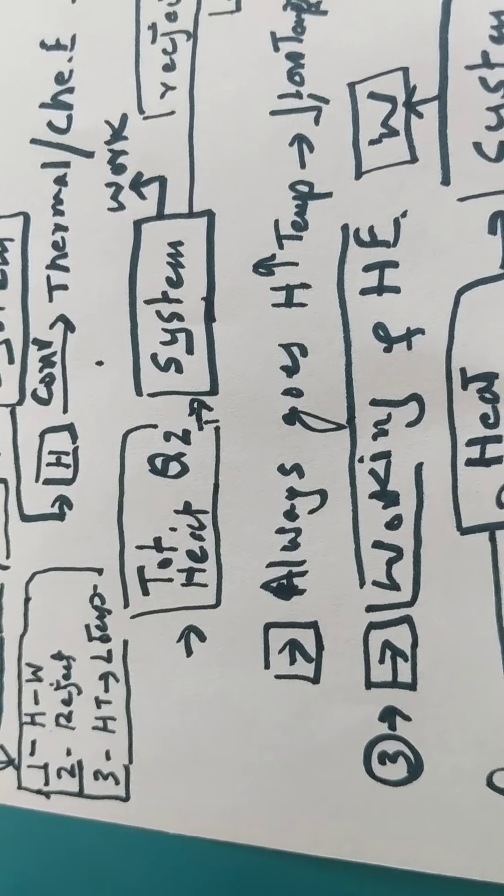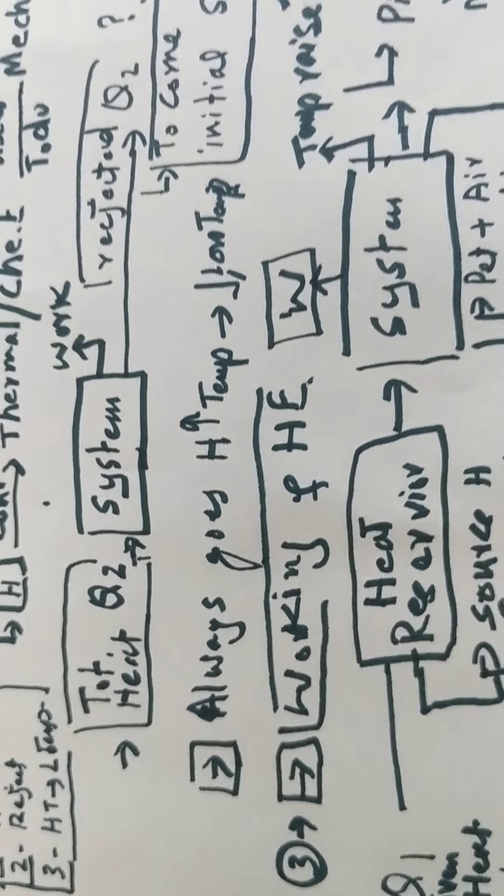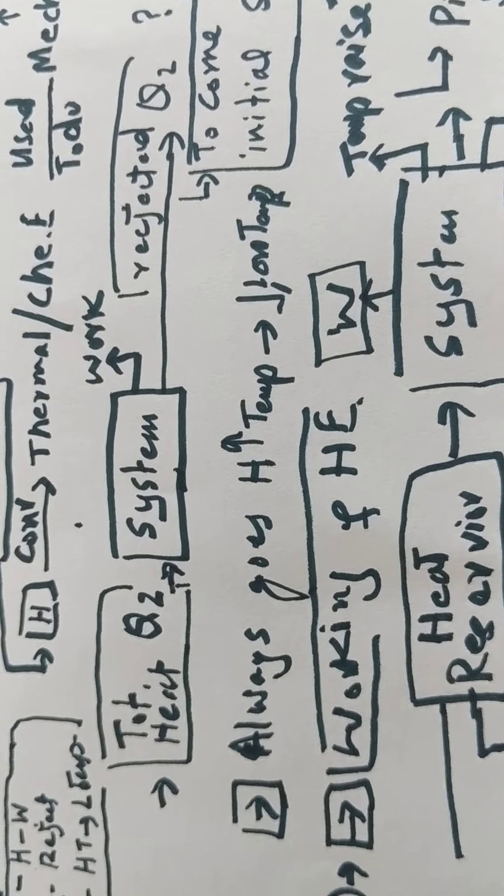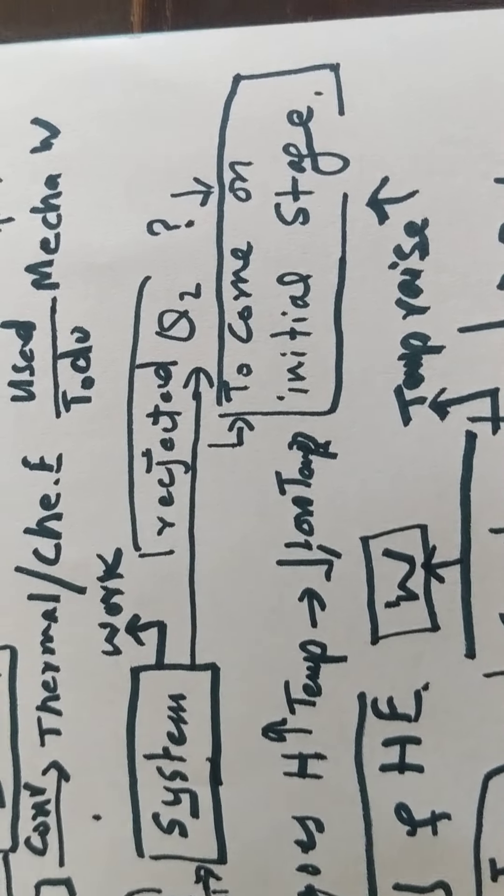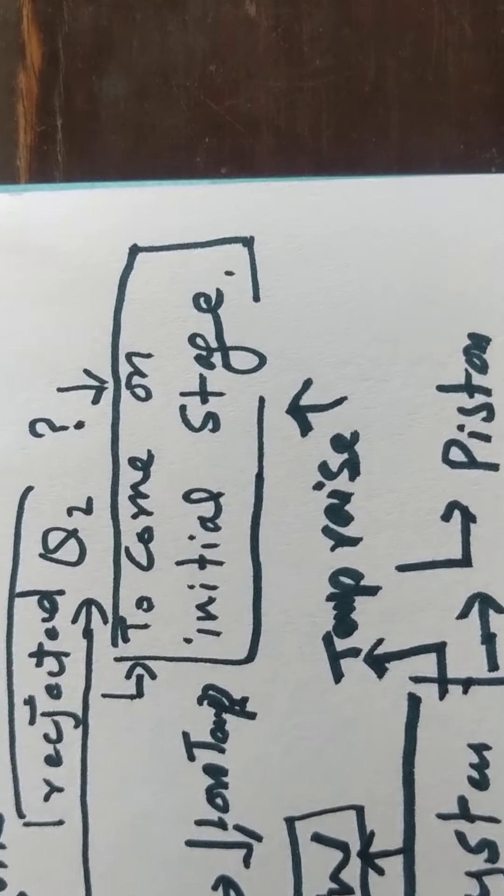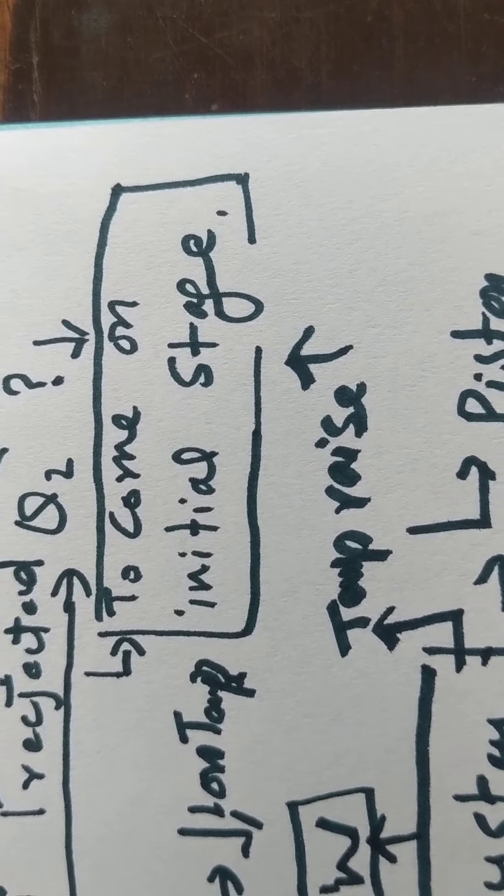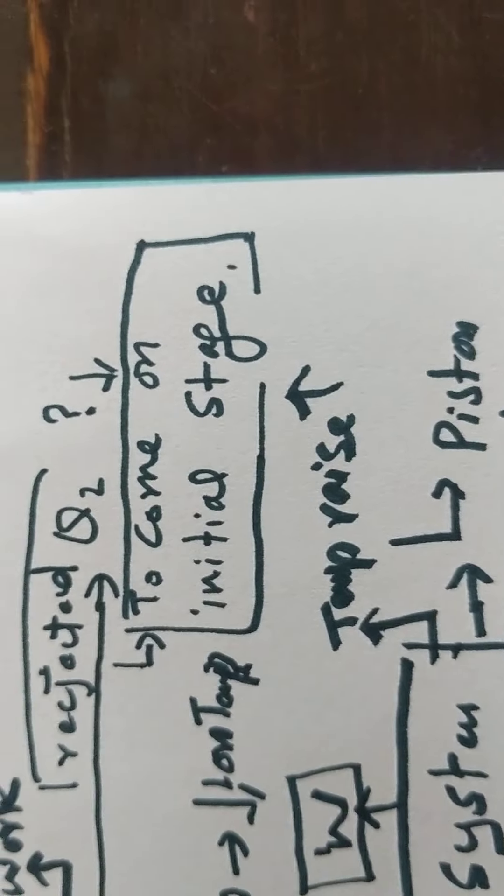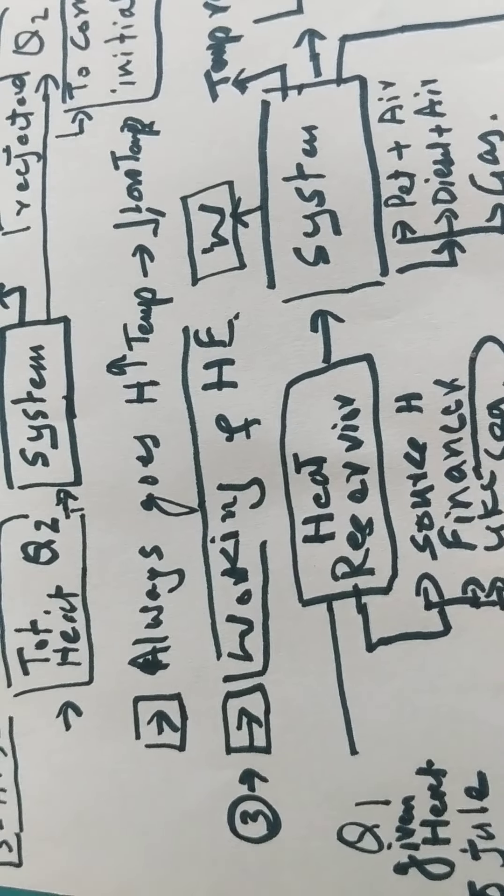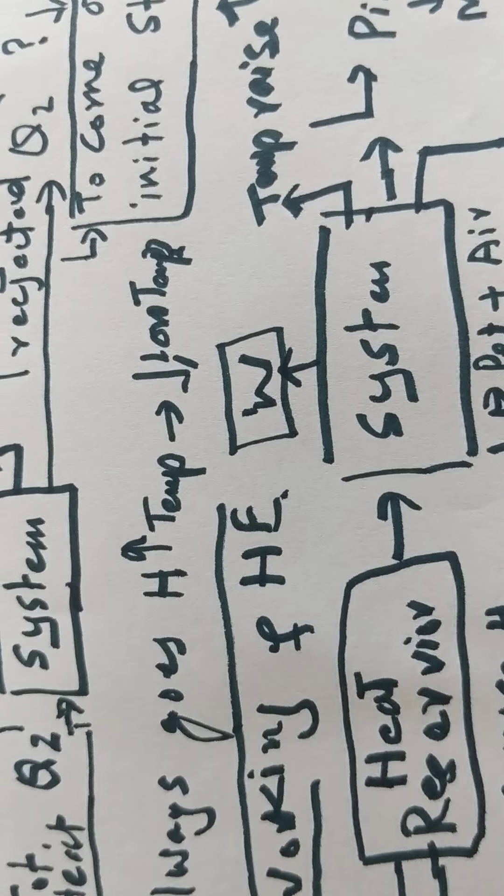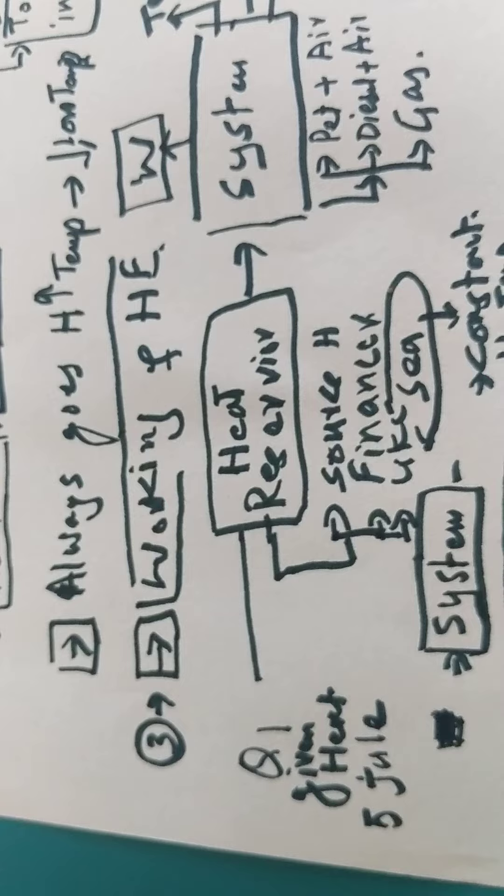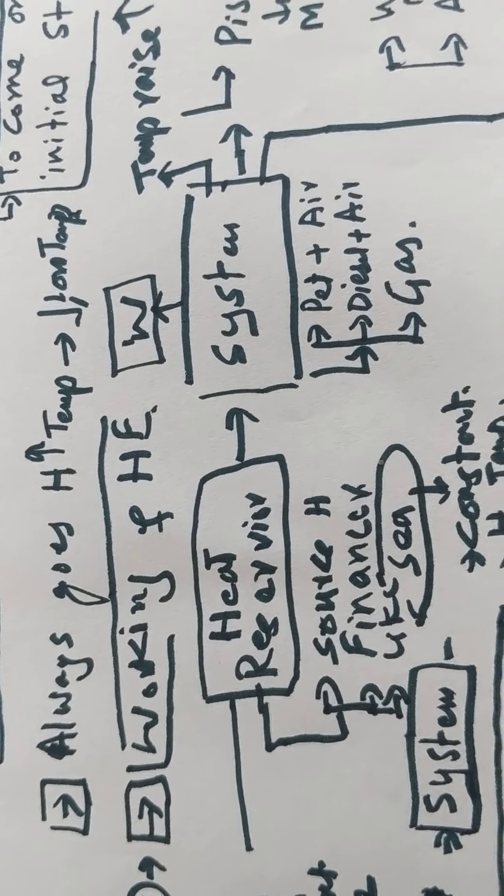These are the three principles: the system does work, then heat is rejected. To return to the initial stage, the engine must come to its initial state. Energy always goes from high temperature to low temperature. Now, the working of heat engine.